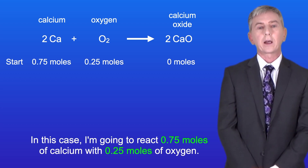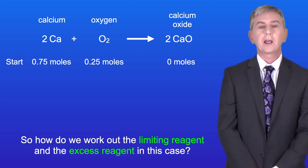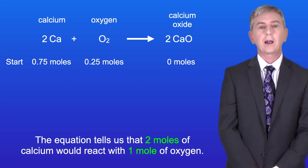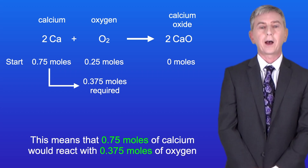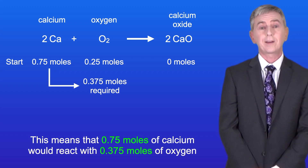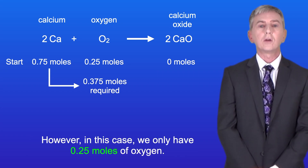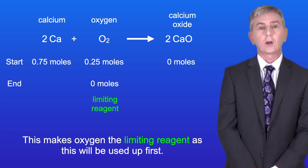In this case I'm going to react 0.75 moles of calcium with 0.25 moles of oxygen. So how do we work out the limiting reagent and the excess reagent? Looking at our first reagent, we have 0.75 moles of calcium. The equation tells us that 2 moles of calcium would react with 1 mole of oxygen, which means that 0.75 moles of calcium would react with 0.375 moles of oxygen. However, in this case we've only got 0.25 moles of oxygen, which makes oxygen the limiting reagent as this would be used up first.